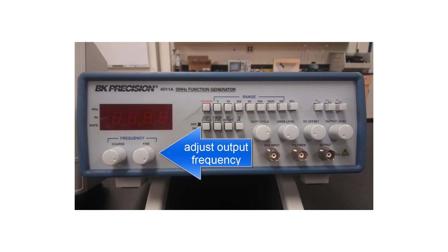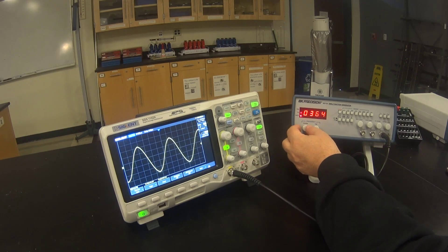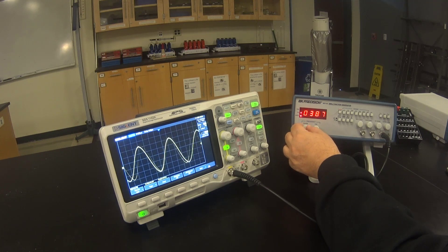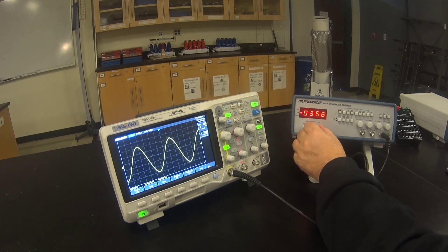You can adjust the output frequency with the coarse and fine adjust knobs here. Select a frequency somewhere between 300 and 500 Hz.